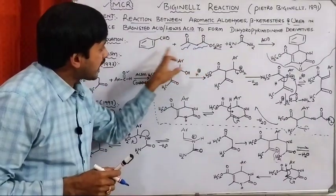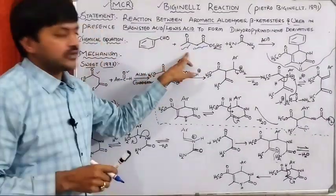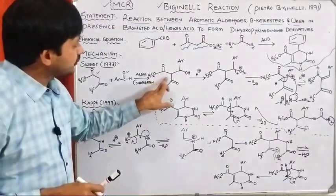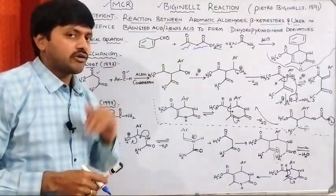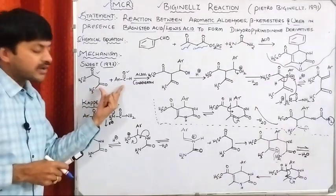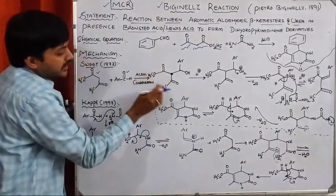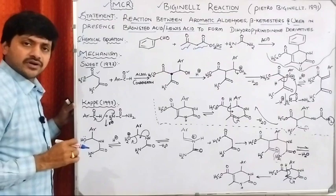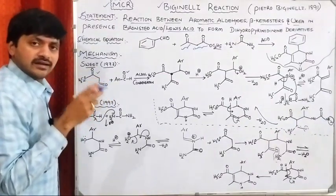These two react together initially by aldol condensation to produce the corresponding compound. The produced compound takes the H+ ion from the acid and further the formation of the dihydropyrimidinone derivative takes place. Looking at how the aromatic aldehyde and beta-ketoester combine: at the alpha position to the keto group, we are adding the aldehyde derivative. Initially, the beta-ketoester involves in keto-enol tautomerism.